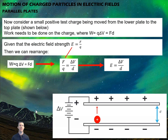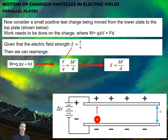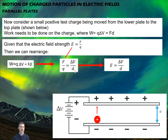If we consider a small positive test charge moved from the lower plate to the upper plate — moved towards the positive plate, which it doesn't want to do — we need to do work on it. If it's moving against the field, we have to apply work. The work done is q·ΔV, or from simple physics, force times distance. Since electric field strength is force divided by q, and work is q·ΔV or force times distance, we can substitute: F/q = ΔV/d. Rearranging, the electric field strength equals ΔV over d — the change in potential divided by the distance.